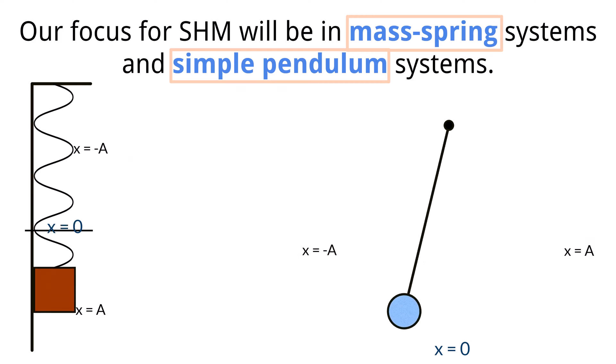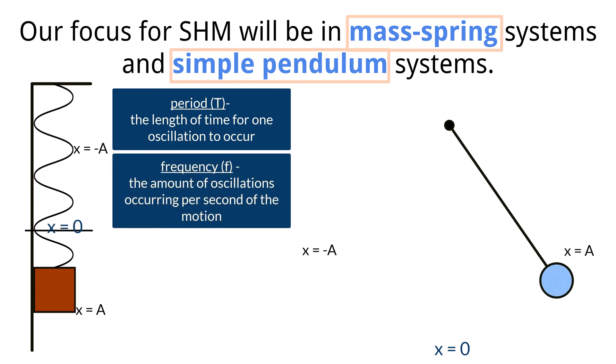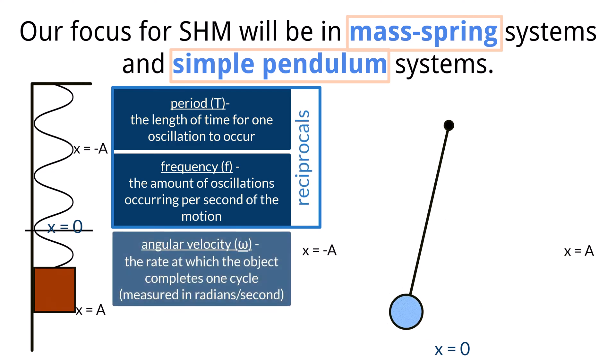The next three quantities we've discussed before and are a bit difficult to label on the diagram. That being said, let's continue with the period, which is the length of time for one oscillation to occur. The frequency is the amount of oscillations that occur per second of the motion. Period and frequency are reciprocals of each other. The angular velocity, also called angular frequency, denoted by a lowercase omega, is the rate at which the object completes one cycle, measured in radians per second. You should recognize the term radian from your math class as a measurement of angles. The equation to get the angular velocity is omega equals 2πf.